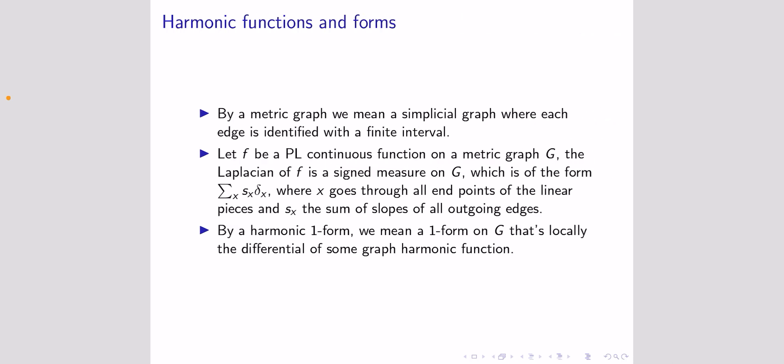First, let's recall the definition of graph harmonic functions and one-forms. By a metric graph we just mean a simplicial graph where each edge is associated with a positive real number — we identify every edge, every one-cell in this simplicial graph, with a finite interval. Here by simplicial graph we just mean a one-complex: some points and some one-cells where the endpoints are glued to the points.